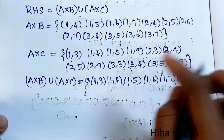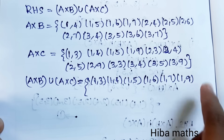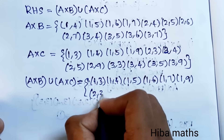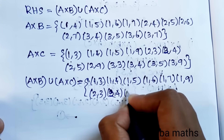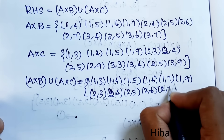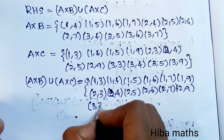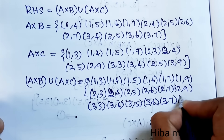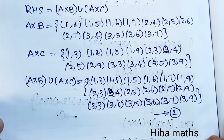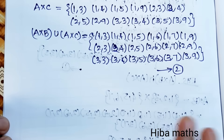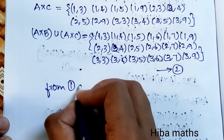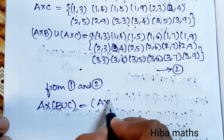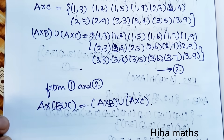For the RHS, compute (A×B)∪(A×C). A×B and A×C were already found. Taking their union gives: (1,3),(1,4),(1,5),(1,6),(1,7),(1,9),(2,3),(2,4),(2,5),(2,6),(2,7),(2,9),(3,3),(3,4),(3,5),(3,6),(3,7),(3,9). Since result 1 equals result 2, A×(B∪C) = (A×B)∪(A×C). Hence proved.